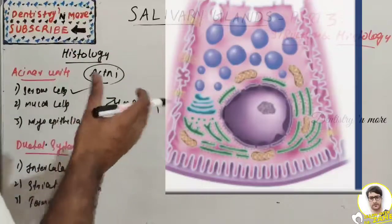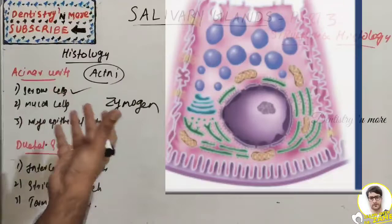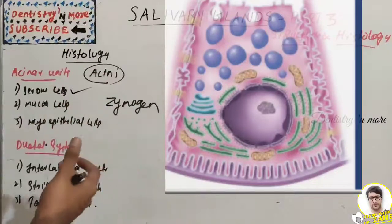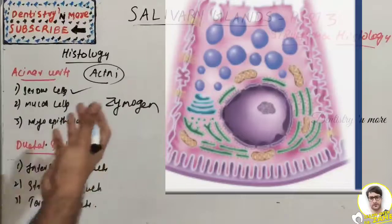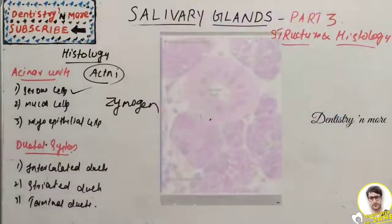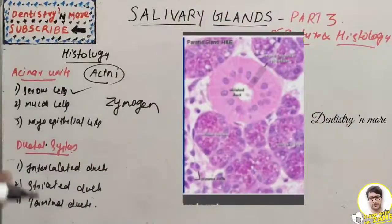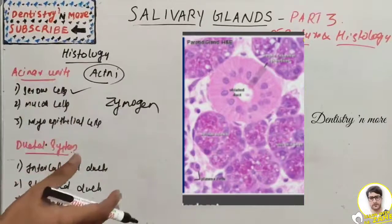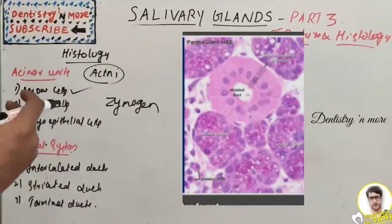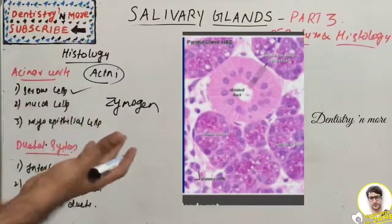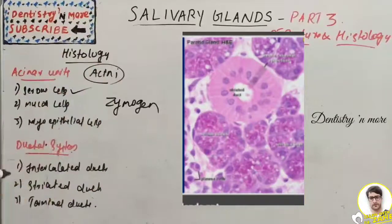Serous cell granules can be visualized in sections using toluidine blue or special stains. Immature granules are paler in density while mature granules are dense. There are intercellular junctions between serous cells: tight junctions, adhering junctions using desmosomes, and gap junctions which allow the passage of ions and small molecules between cells.